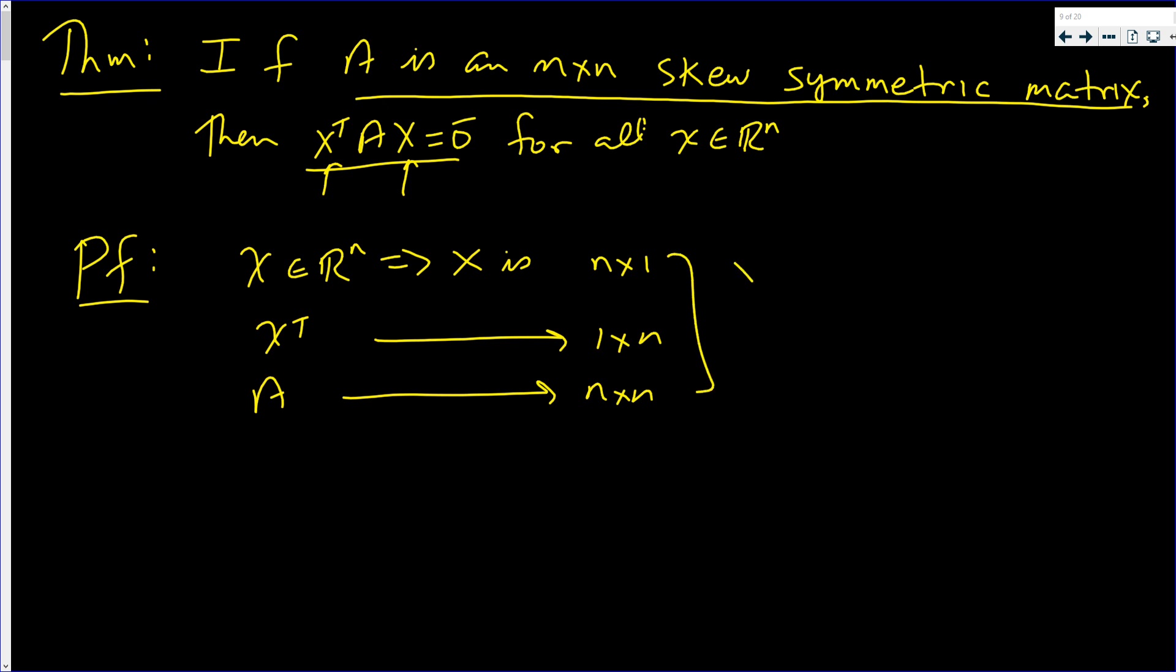So now what is x transpose times A times x? Well, let's do that product first. X transpose is one by n times A which is n by n. Since those are the same, we're going to get back a one by n matrix.